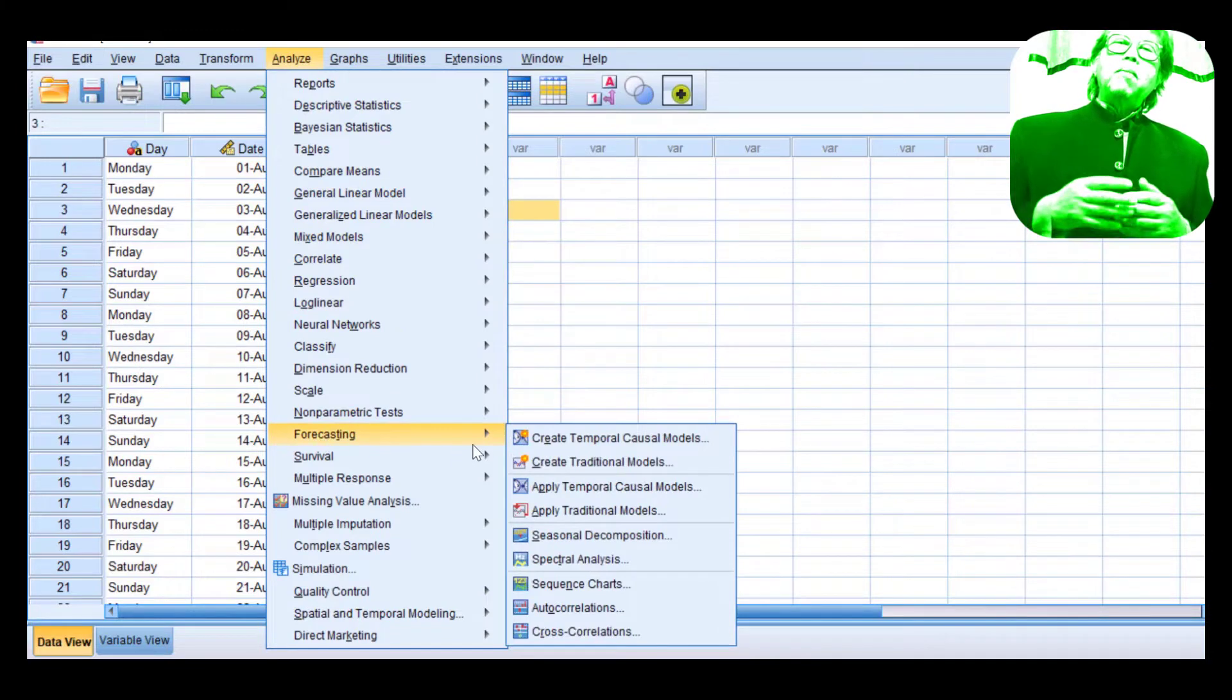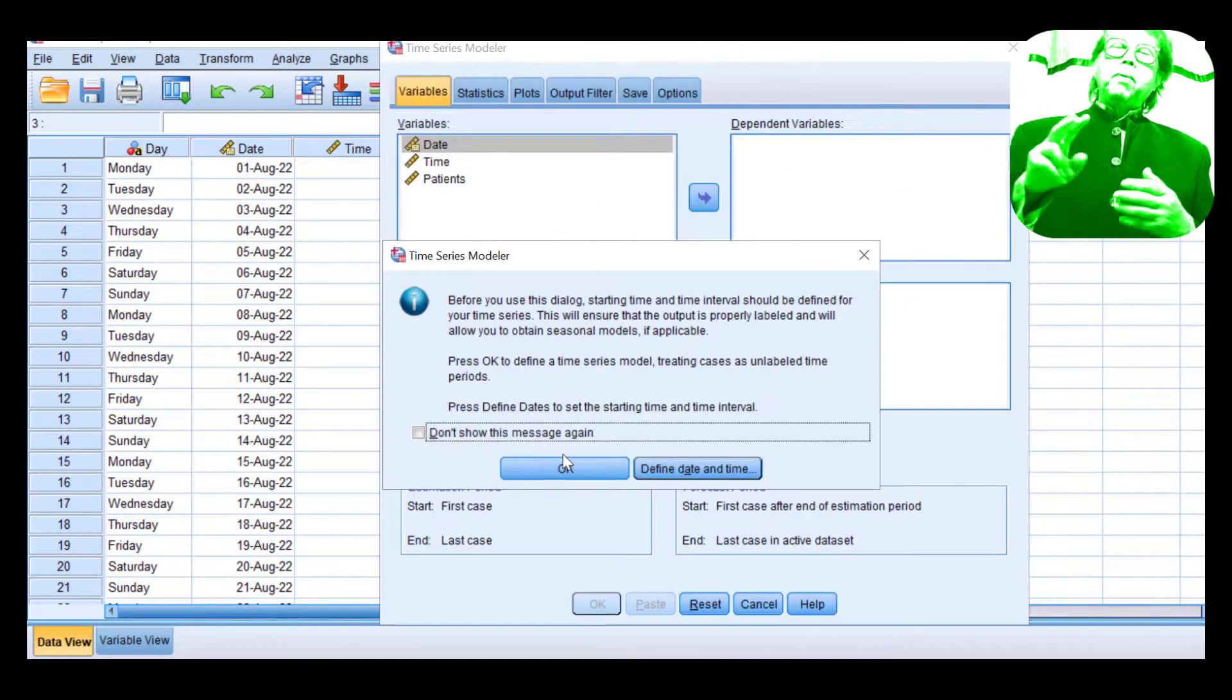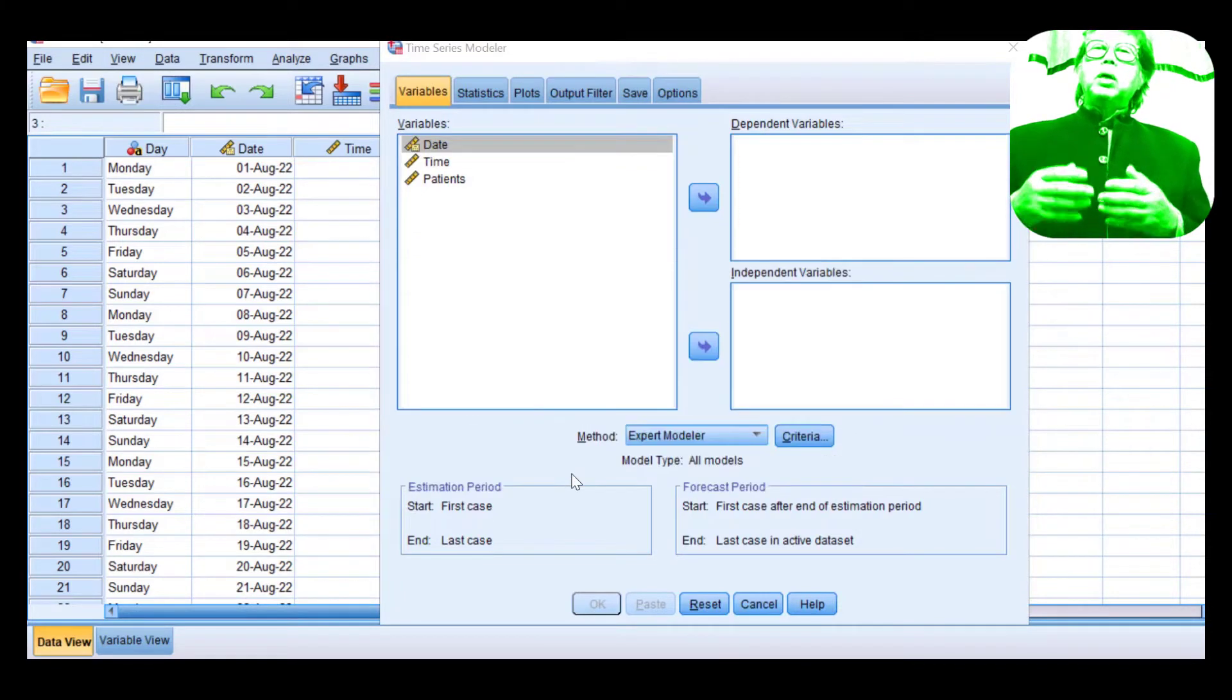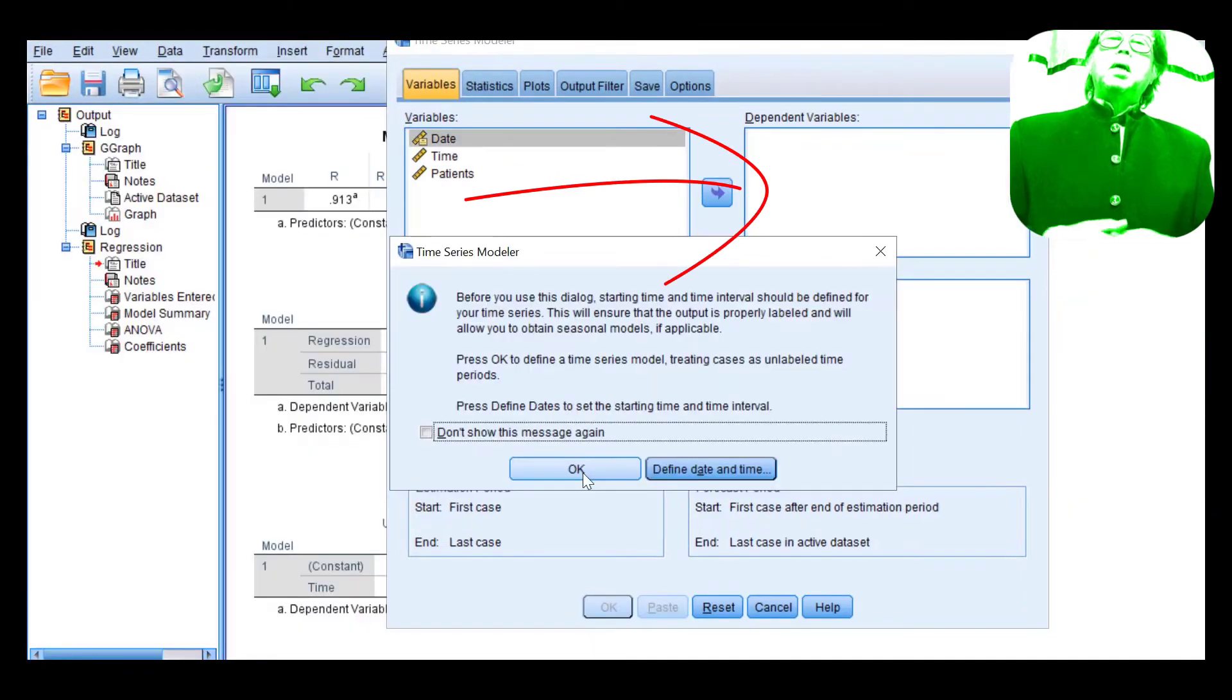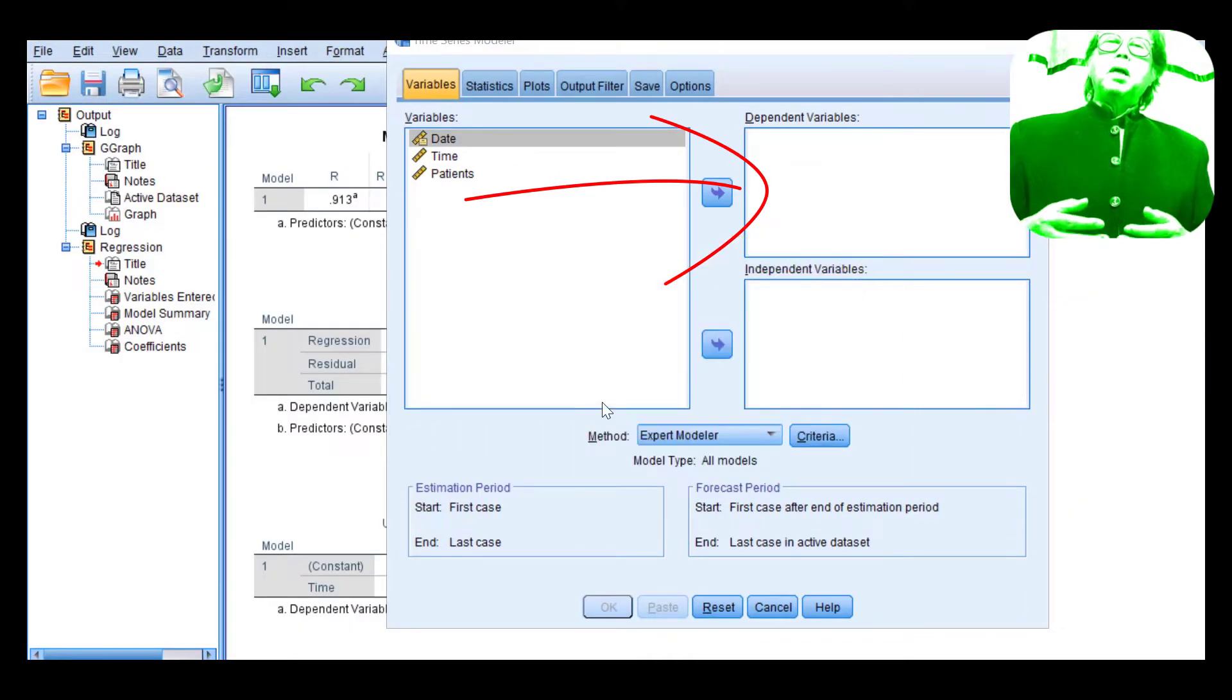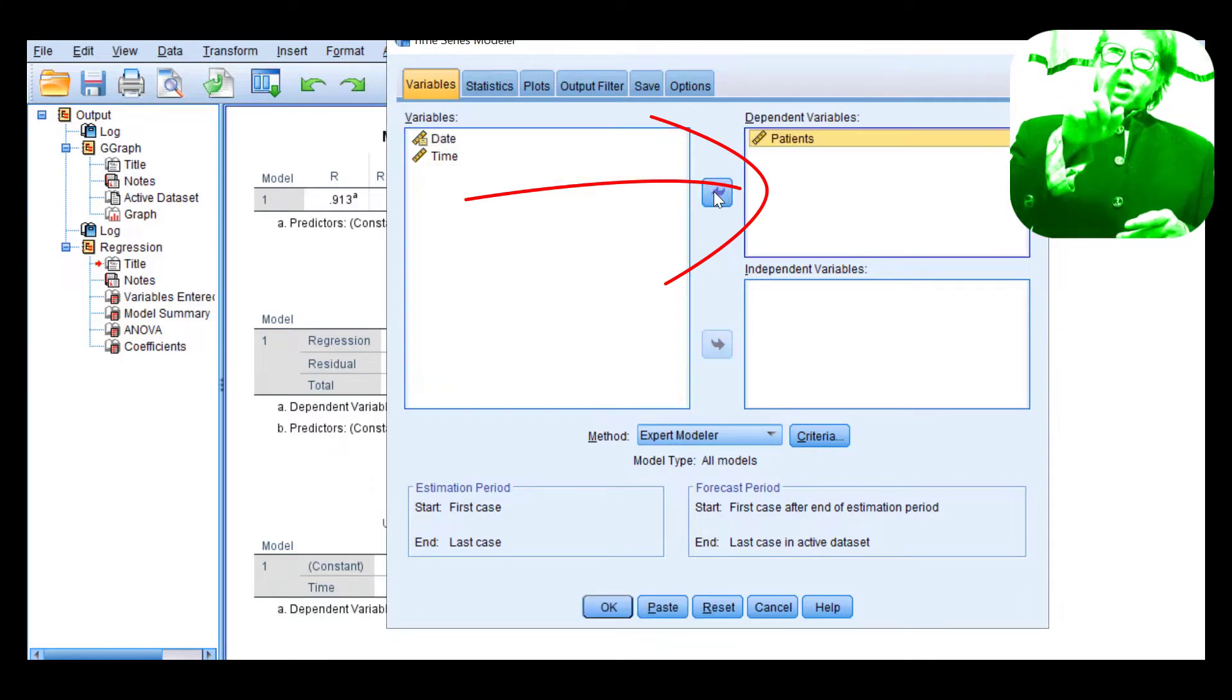To ask SPSS to implement autoregressive 2, following the above command, you need to click Variable, ARIMA, and Criteria, and type 2 in the column autoregressive. To perform regressive model, you need to put patient as the dependent variable tag and drag it on the right-hand side, then click OK.